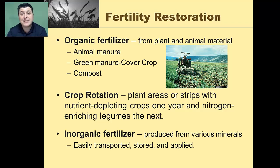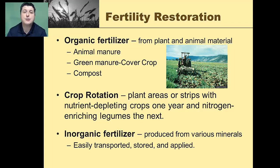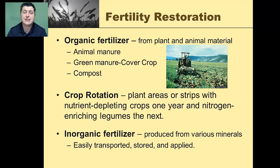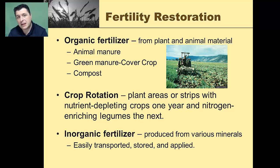Crop rotation can also restore soil fertility. If you plant nutrient-depleting crops like corn — which requires a lot of nitrogen — one year, you can then plant legumes the following year. Legumes have a symbiotic relationship with rhizobium bacteria that enables nitrogen fixation, putting nitrogen back into the soil. By rotating crops and rotating the land, we can avoid depleting the soil of nutrients.